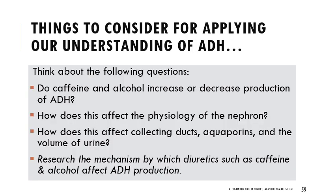When thinking about ADH and applying this: you should consider whether caffeine and alcohol increase or decrease production of ADH, how that affects the physiology of the nephron, how it affects collecting ducts, aquaporins, and urine volume, and think about the mechanism by which diuretics such as caffeine and alcohol affect ADH production. The rest of the homeostasis Chapter 26 lecture will be posted separately — it will not be on the next quiz, but this material will be. Please email if you have any questions, and the resource for lecture exam two will be posted soon.